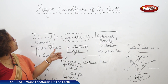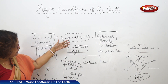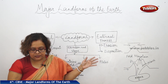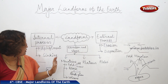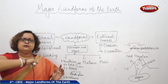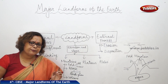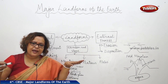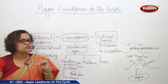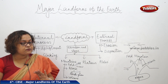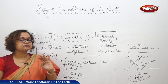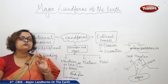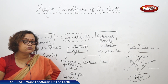The major landforms are mountains, plateaus, and plains. The difference between mountain and plateau is that mountains have very high elevation with conical peaks, while plateaus have a flat region with moderate height. Plateaus have basic amenities of life and are enriched with minerals that are easy to access.